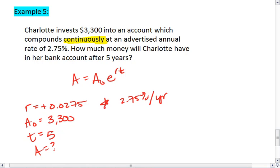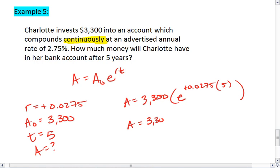We get A equals 3,300 times e to the positive 0.0275 times 5. A equals 3,300 times e to the—let's see what 5 times 0.0275 is—we get 0.1375.